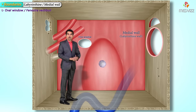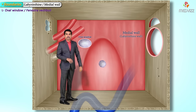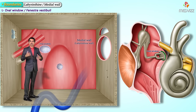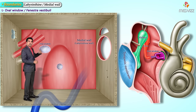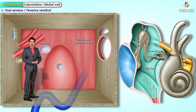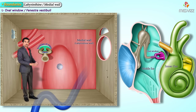The oval window, also called the fenestra vestibuli, is a membrane-covered opening that leads the middle ear to the vestibule of the inner ear. Vibrations from the tympanic membrane travel through the ossicles and enter the inner ear here. The oval window is the intersection of the middle ear with the inner ear and is directly contacted by the footplate of the stapes.